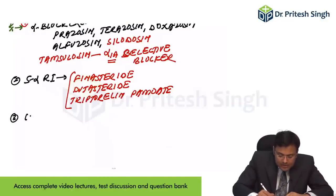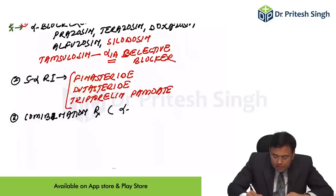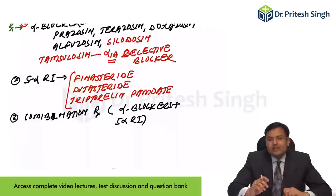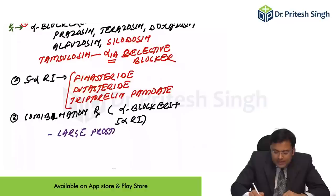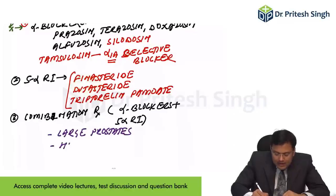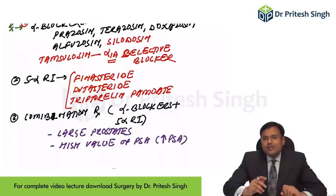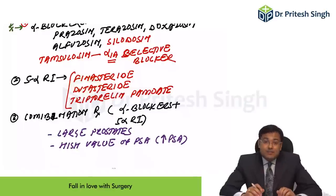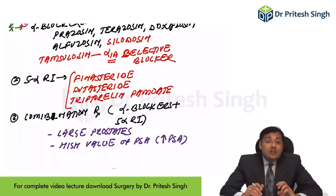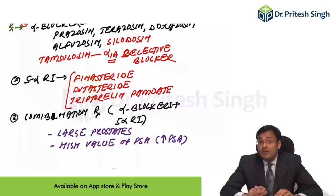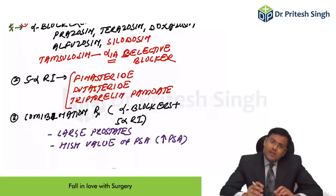In some patients, combination treatment is given — both alpha blockers plus 5-alpha reductase inhibitors. Combination treatment is preferred in patients having large prostates and high PSA or raised PSA levels. In the majority of patients, medical management is sufficient.